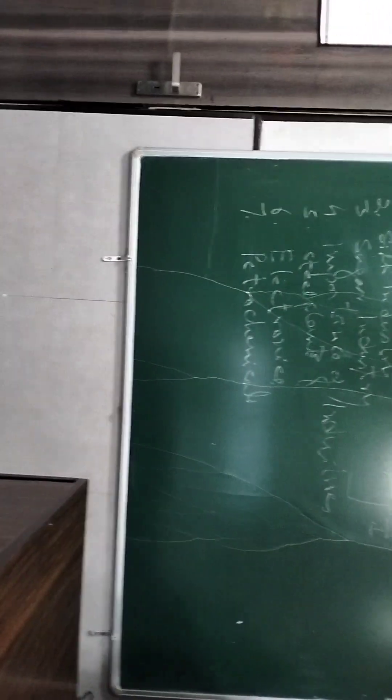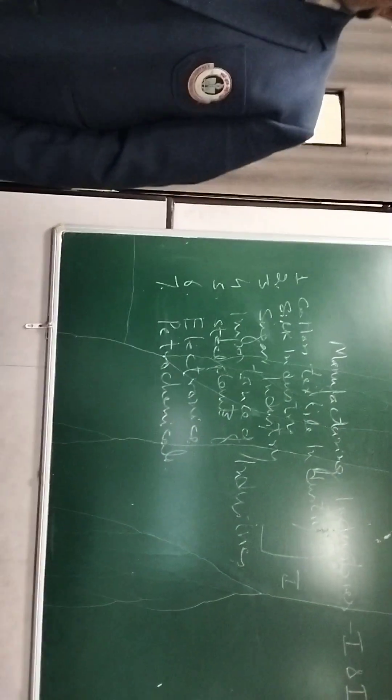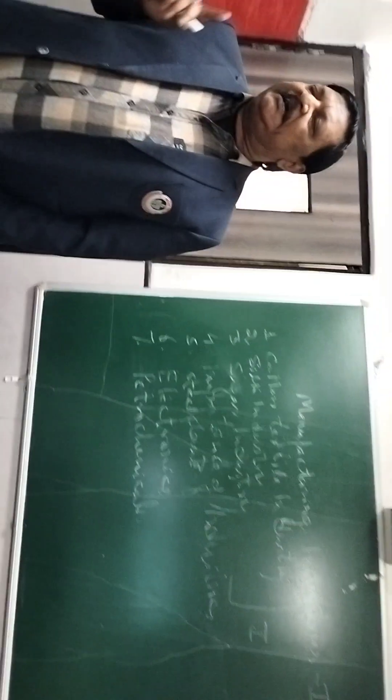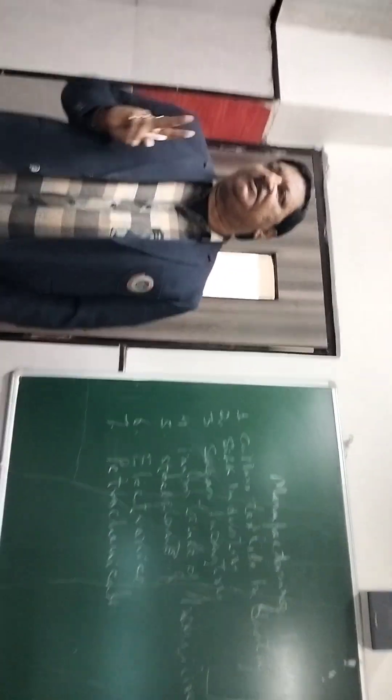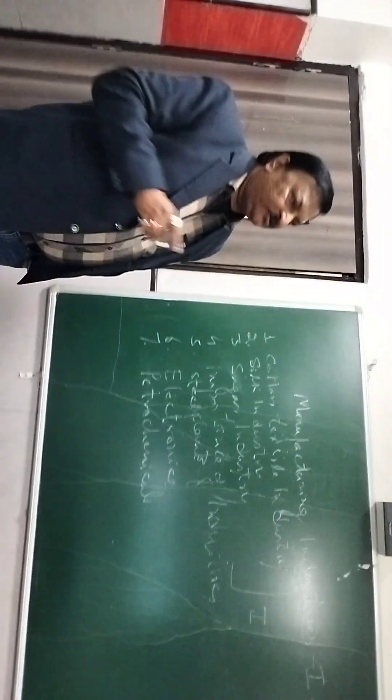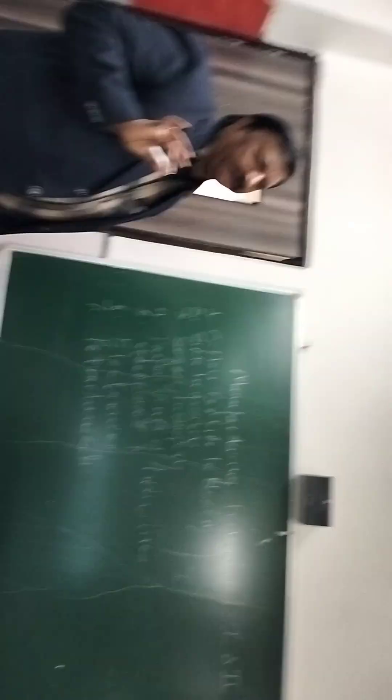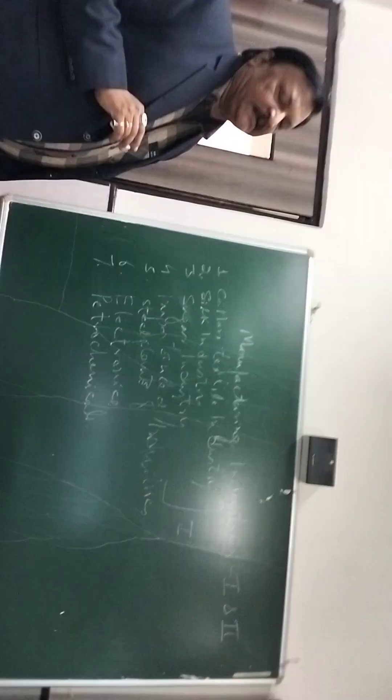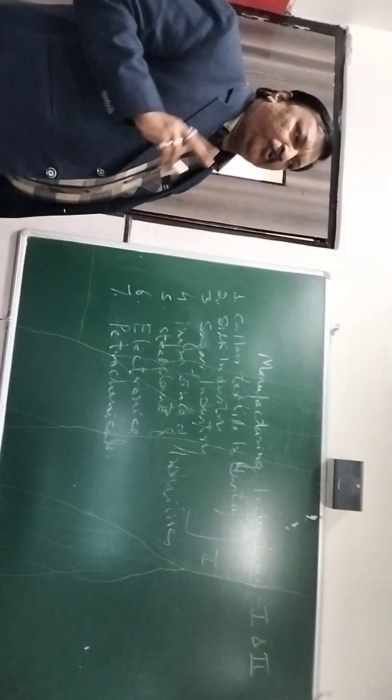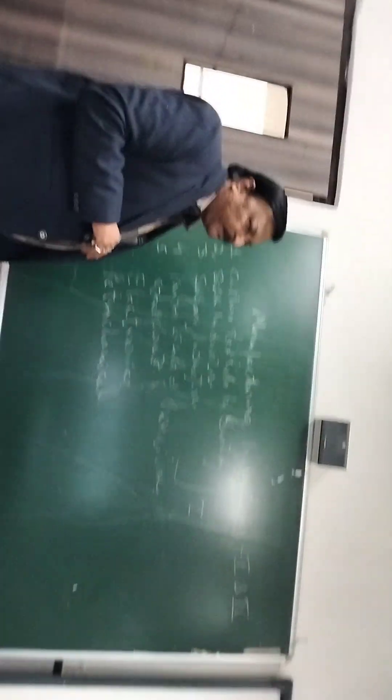Now in these two lessons, this is a complete unit and this complete unit will fetch you 10 marks. There will be one question of 10 marks from these two lessons. That means if you are preparing this, you are getting it done. This unit is divided into two lessons - manufacturing industries part 1 and part 2.